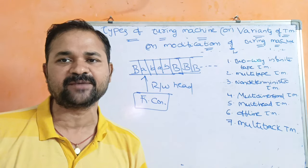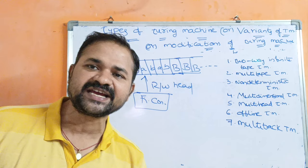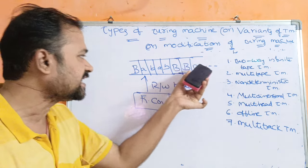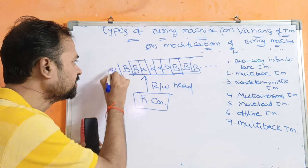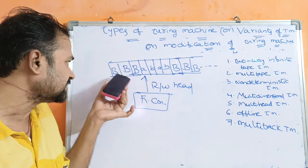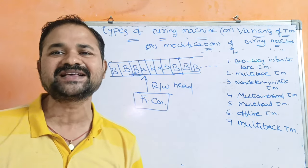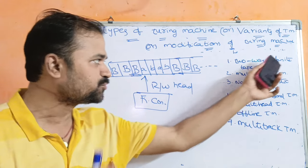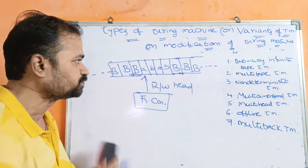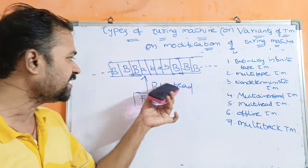First let us see the two-way infinite tape Turing machine. The name itself specifies the meaning — the tape is infinite at both the left-hand side and the right-hand side, so we can have infinite blank symbols on both sides. In the general Turing machine, the tape is infinite only at the right-hand side. In the two-way Turing machine, the tape is infinite in both directions, and the remaining components — one read-write head and one finite control — stay the same.